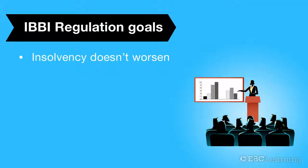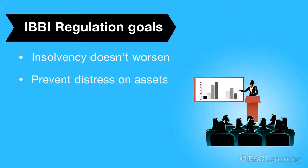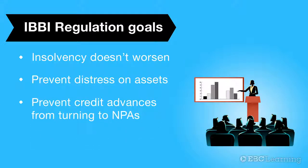Prevention is better than cure. This preventive measure ensures three things. First, the insolvency of the corporate debtor doesn't worsen. Second, the assets are not put under distress. And third, the credit advanced does not become a non-performing asset. The objective behind this is to reduce non-performing assets and to maximize the value of the distressed asset.